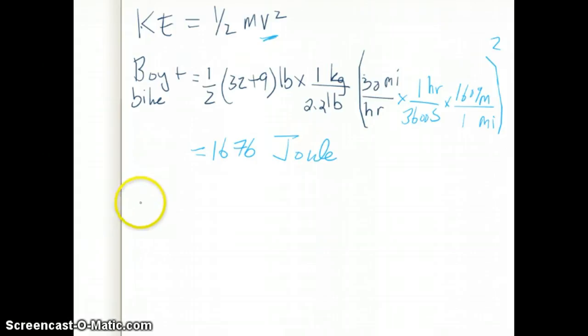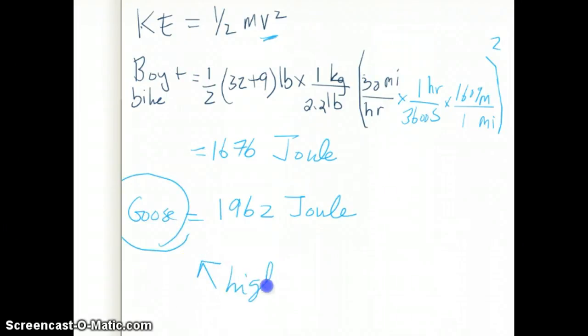Now you can do the same calculation for the bird, which is your goose here, and if you do the same calculation, which is to convert all of these appropriately, you should get a value of 1962 joules. So in this case, we can see that the goose is actually the object with a higher kinetic energy compared to the to the boy, okay, with the bike.